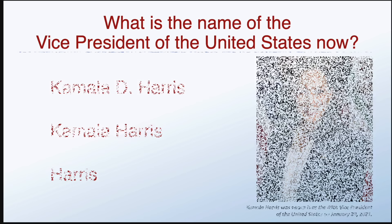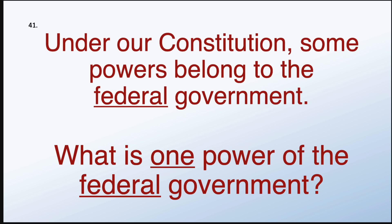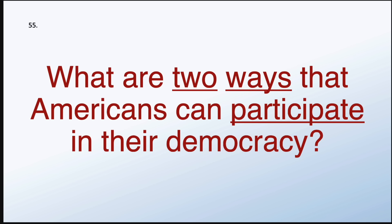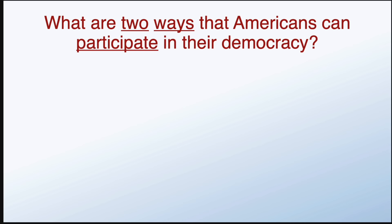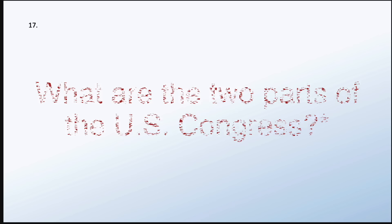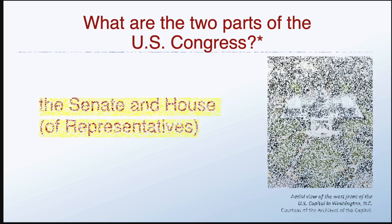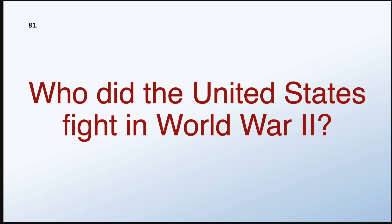Under our Constitution, some powers belong to the federal government. What is one power of the federal government? What are two ways that Americans can participate in their democracy? Vote and join a political party. What are the two parts of the U.S. Congress? Who did the United States fight in World War II? Japan, Germany, and Italy.